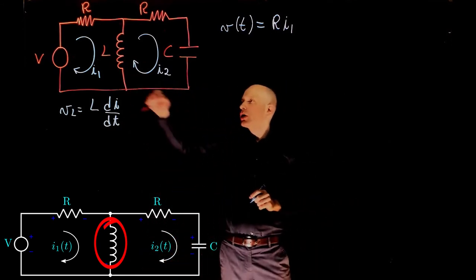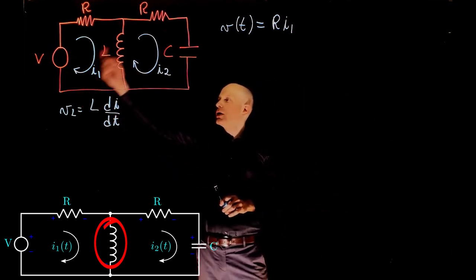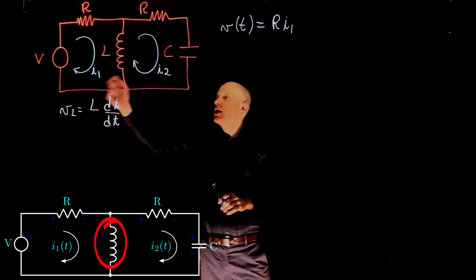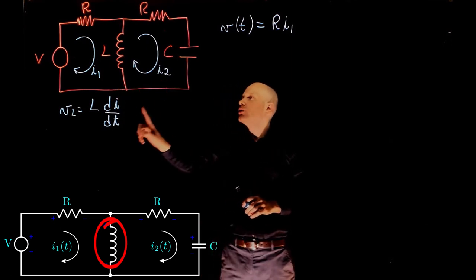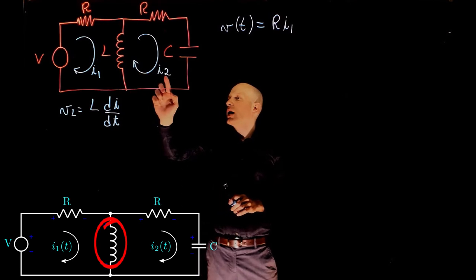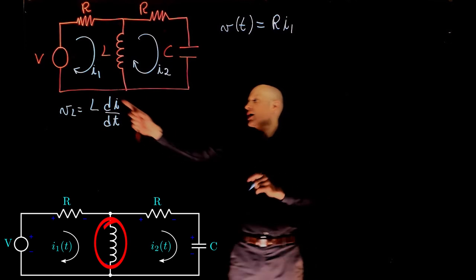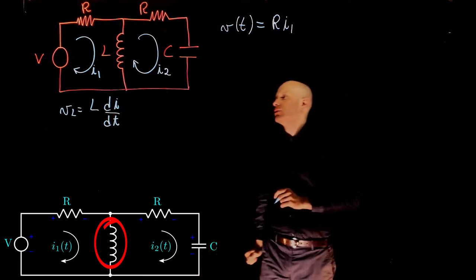But if you note here, we have two currents going through that inductor. One is I1 that we are taking as our reference and hence is positive, and we have I2 going upwards. Because our reference is I1, we can say that I2 is negative and the net current that passes through the inductor is I1 minus I2.